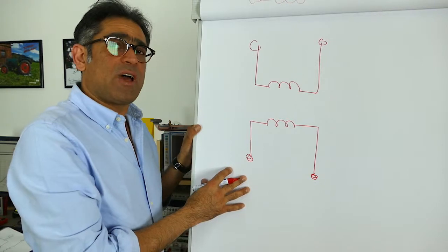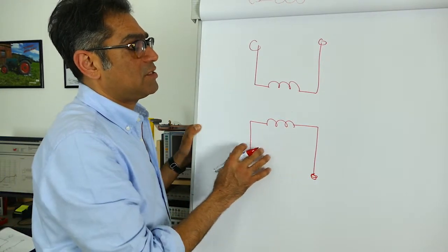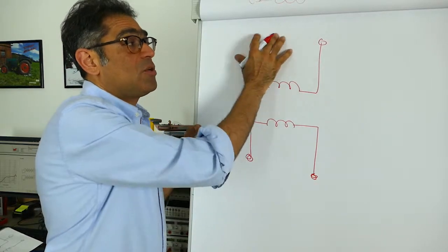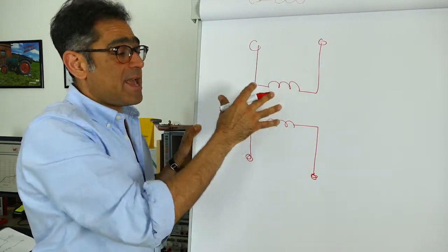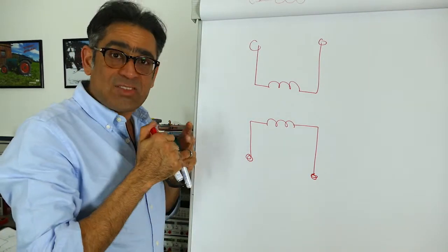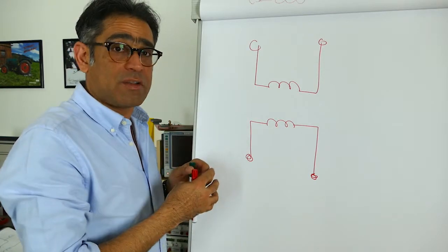If I use the Bode 100 in order to measure the inductance of this coil, this winding, whilst leaving this completely open so there is no current flowing in this part, then I will measure the total inductance as seen by the common-mode currents.